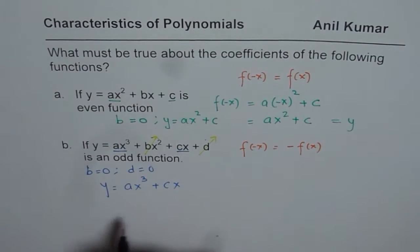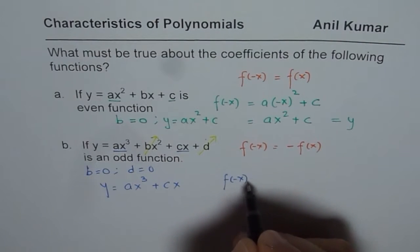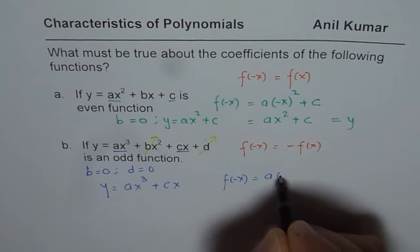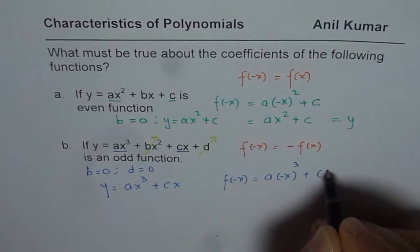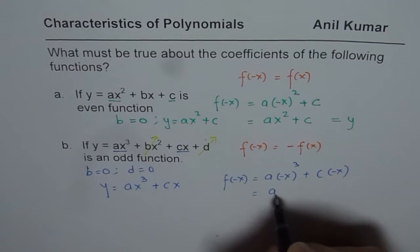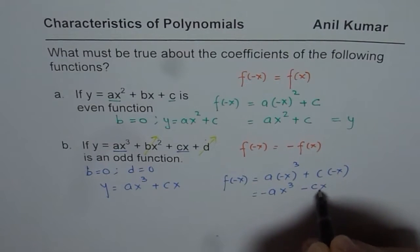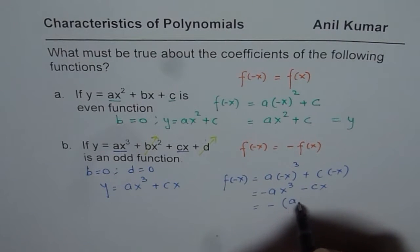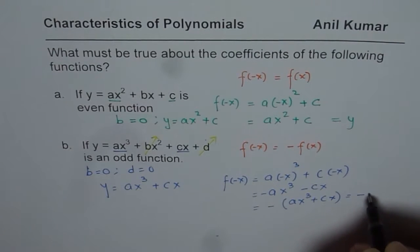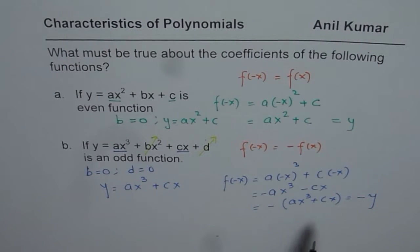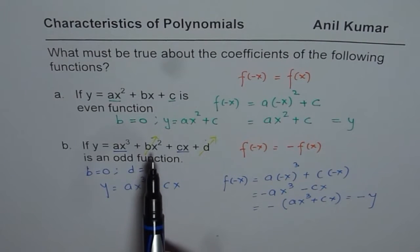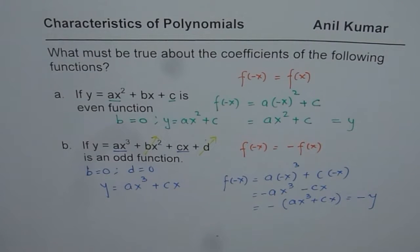Let us test it out. So in this case, f of minus x is, replace x with minus x, minus x cubed plus c with minus x. And what we get here is a, and this is negative x³, and this is negative cx. You can take negative outside, so you get ax³ + cx, and that is negative of y, the f of x. Since it is negative y, it is an odd function. But if b and d are not zero, then you'll not get this condition, so it won't be an odd function.